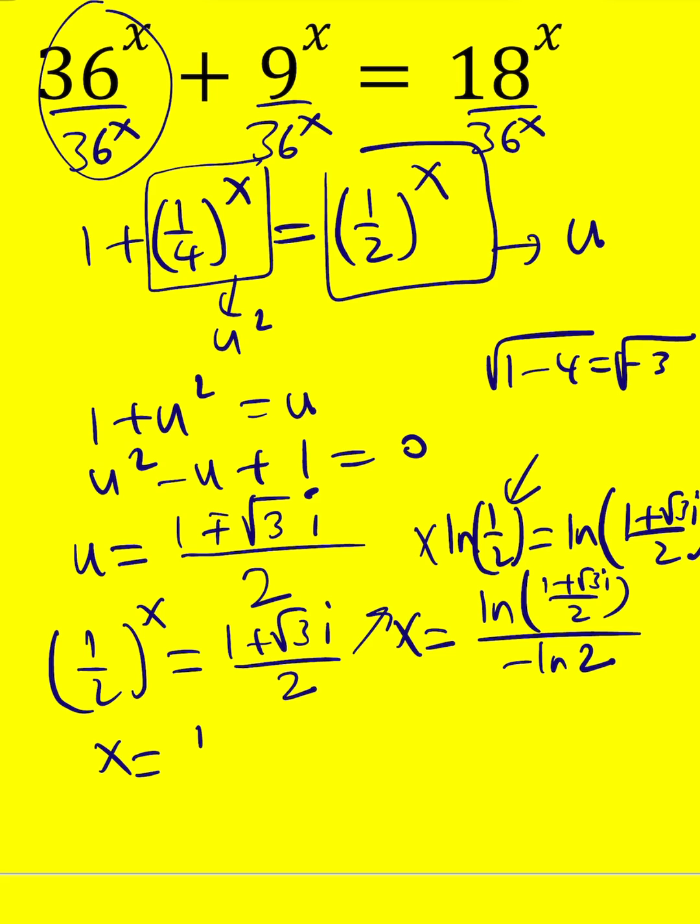What's the argument for 1 plus root 3i over 2? If you think about it, the tangent theta is root 3, which is 60 degrees or pi over 3. So this is just going to be i times pi over 3 divided by negative ln 2.